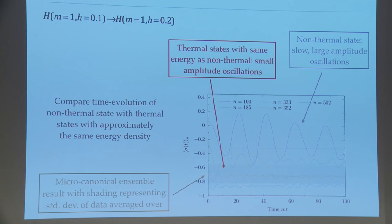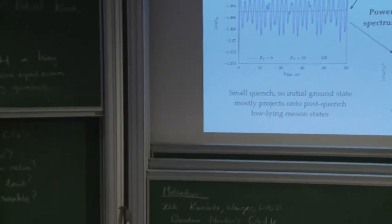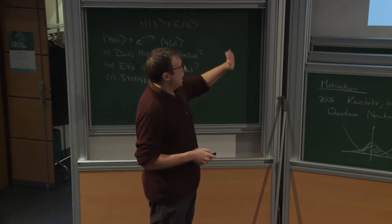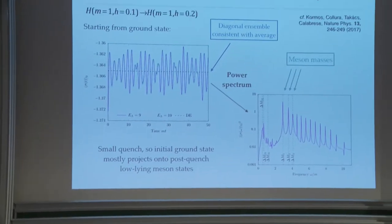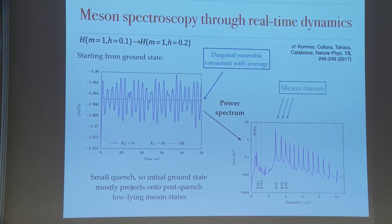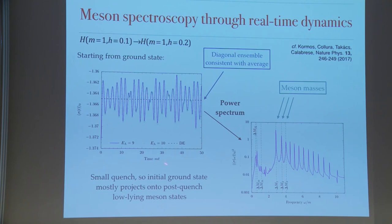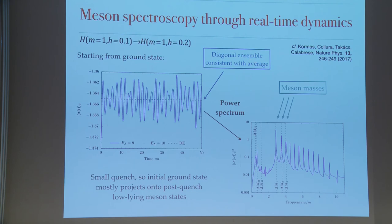Something interesting about these real-time dynamics, motivated by Gabor's lattice work: starting from the ground state and doing a small quench, you mostly project onto low-lying mesons, and the time evolution has a lot of structure with many frequencies of oscillation. The diagonal ensemble prediction agrees well with the time average. Taking this time evolution for long times and doing a Fourier transform allows you to do spectroscopy on your mesons — you get very strong peaks in the power spectrum, which allows you to pick out the meson masses. This was also done on the lattice by Gabor very nicely.